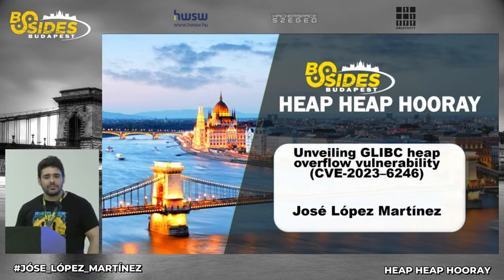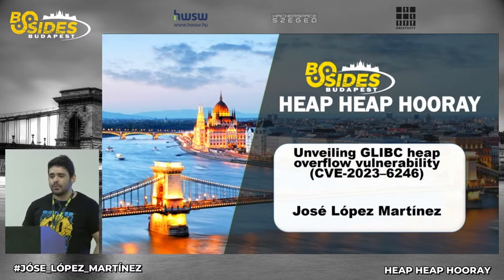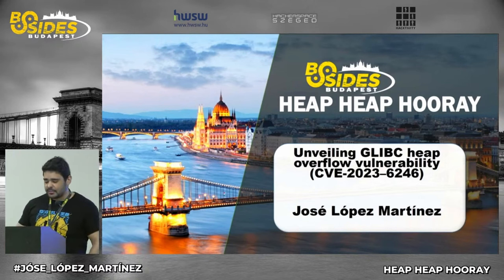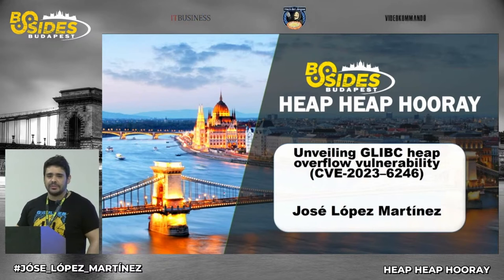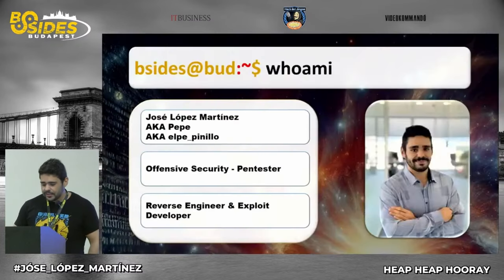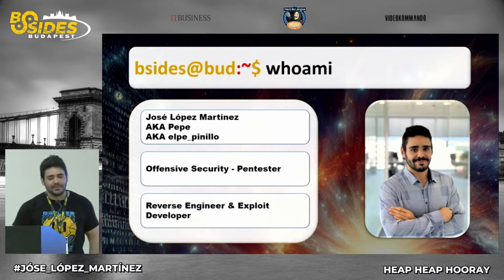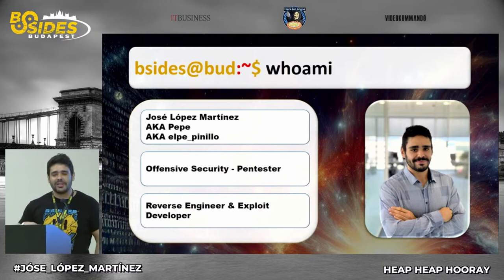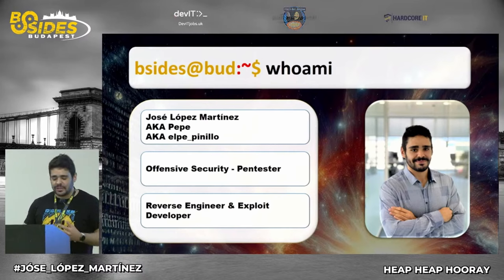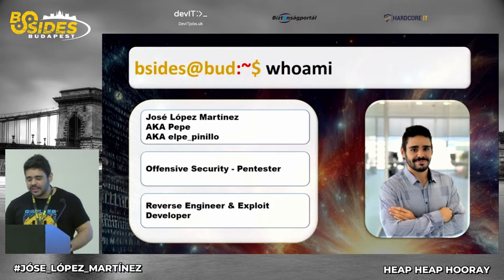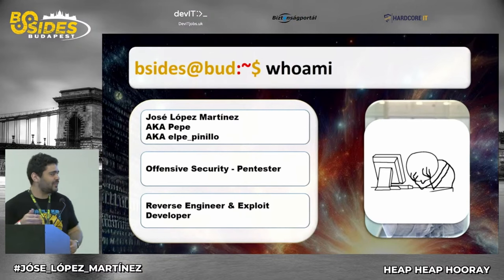It was discovered this year in January by Qualys. They did an amazing job — they could escalate privileges just by changing the program name of any program, because it's a vulnerability in glibc. I work in offensive security as a pen tester and I'm interested in reverse engineering and exploit development.